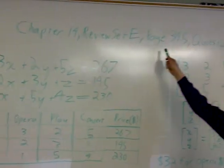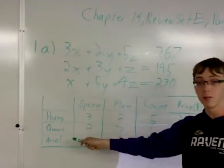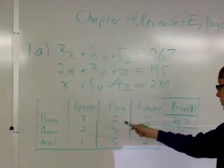This is chapter 14, review set E, question number 1 on page 345. Hung, Kwon, and Ariel went to a series of operas, plays, and concerts.